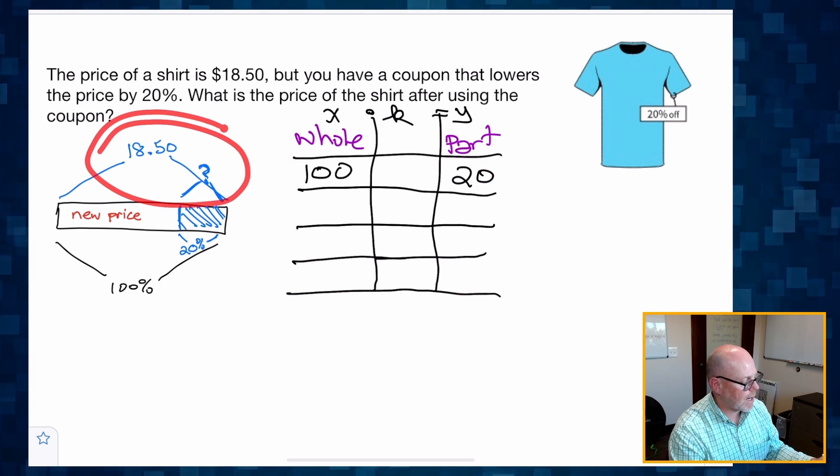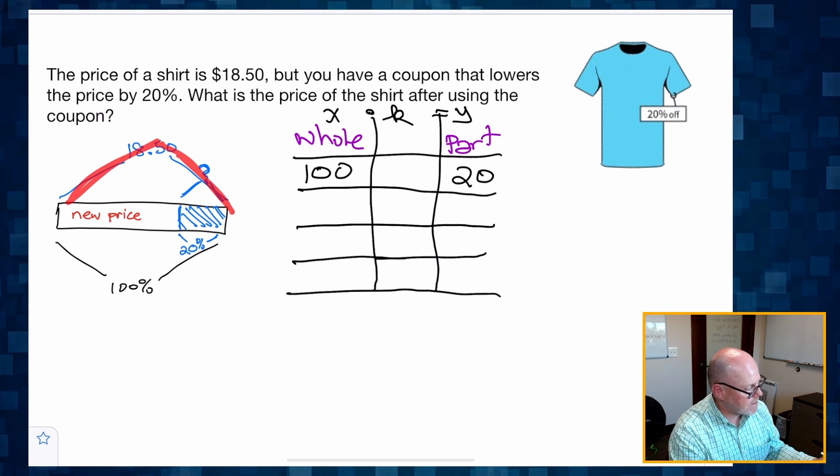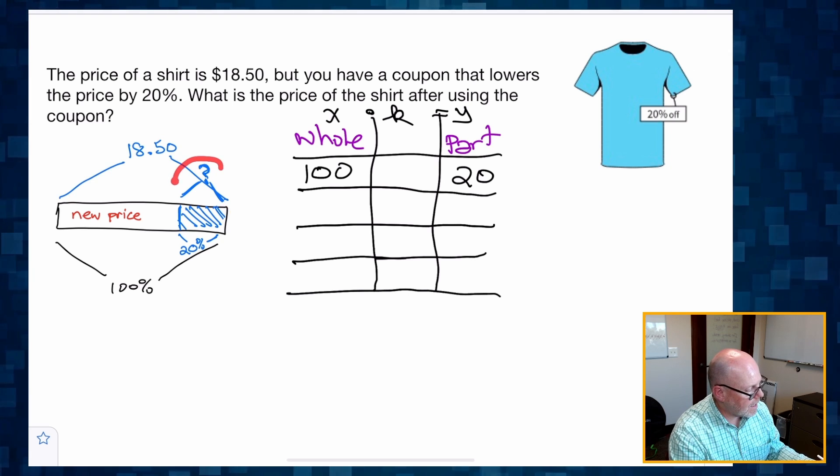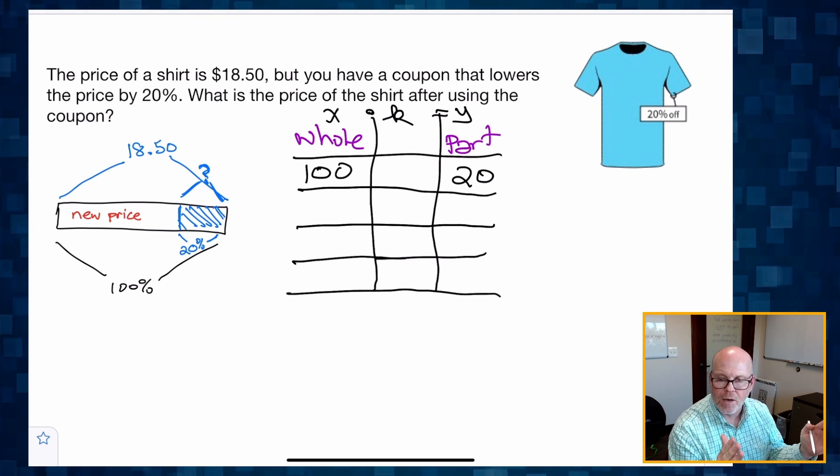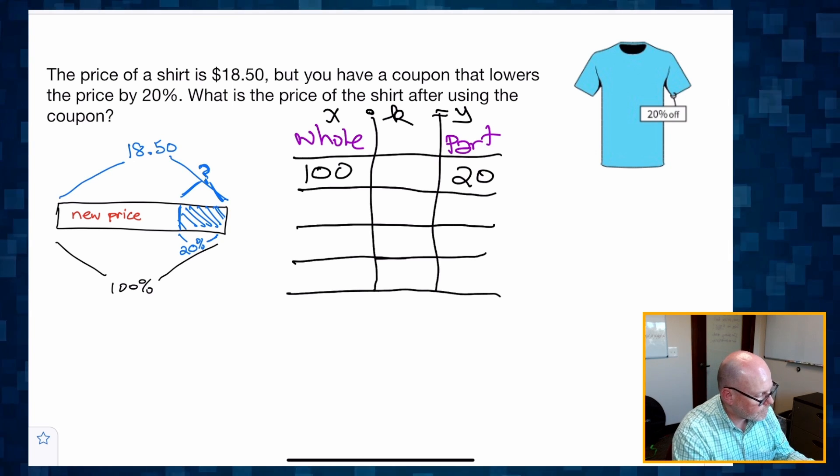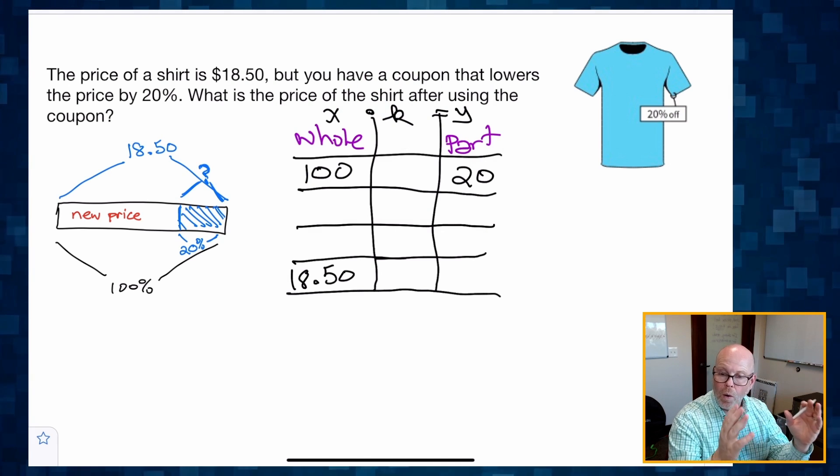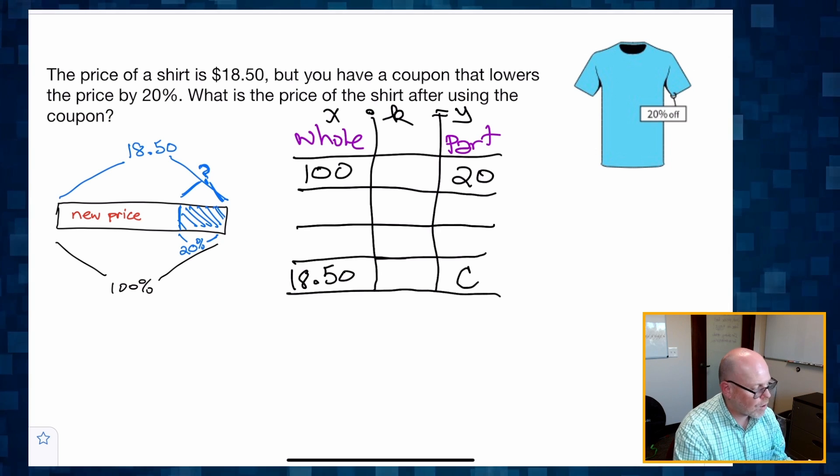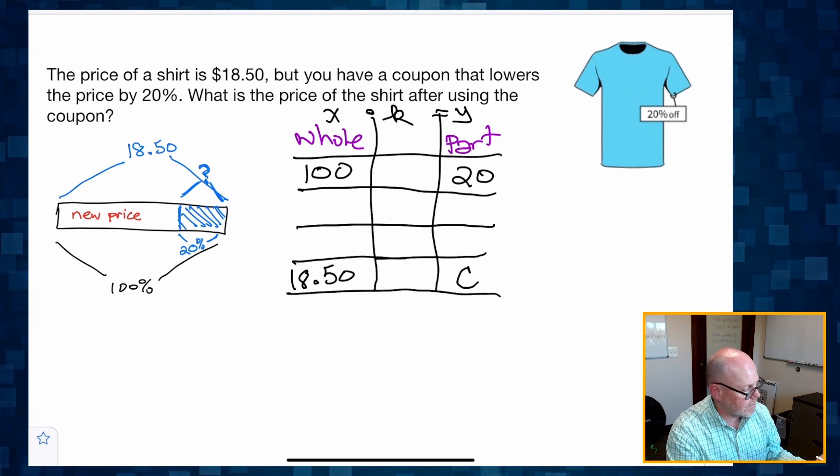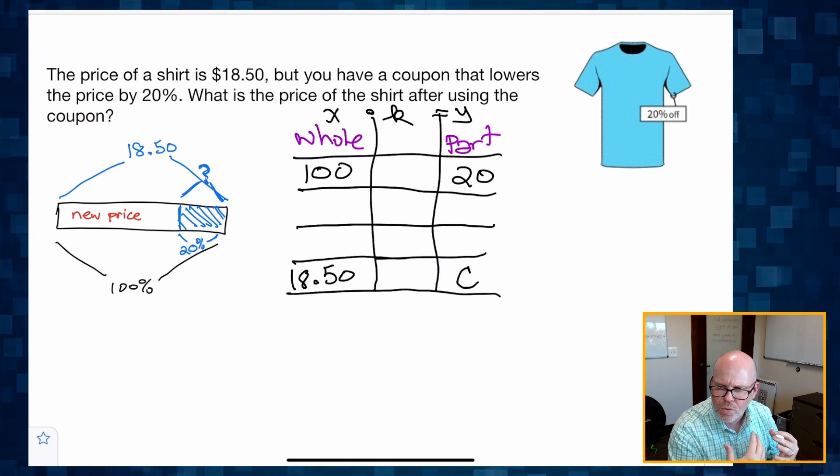And then what other ratio can we put into this table? Well, I see right up here that 1850 is the whole and this unknown amount, that's the coupon, is our part. So let's fill that in and put 1850 is the whole. And I'm going to put C for our coupon is that associated part, but we don't know the value of that.